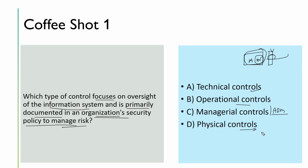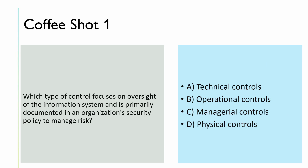The question talks about oversight of information systems — not something technical monitoring it — and it's documented in the security policy, which is strategic in nature. So technical and physical are removed. Between operational and managerial, operational is more day-to-day in nature, and managerial is management-level. That's where the answer is managerial control.